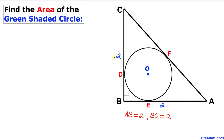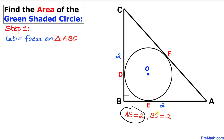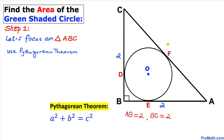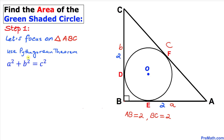Let's get started with the solution. Let's focus on triangle ABC. In this triangle, side AB is two units and side BC is two units as well. Since this is a right triangle, we are going to use the Pythagorean theorem: A squared plus B squared equals C squared. The longest side is AC, which I'll call C; the horizontal side I'll call A and the vertical side I'll call B.